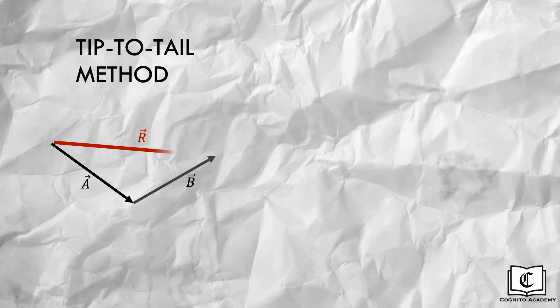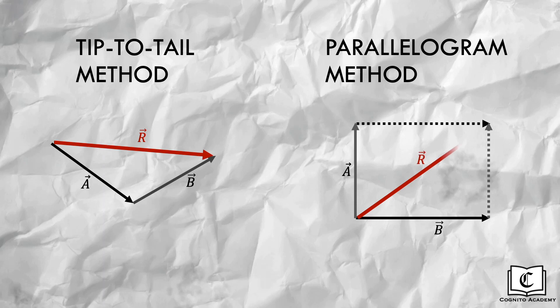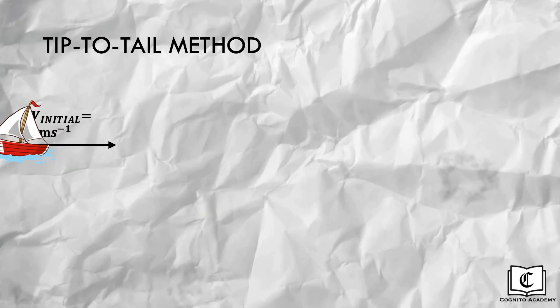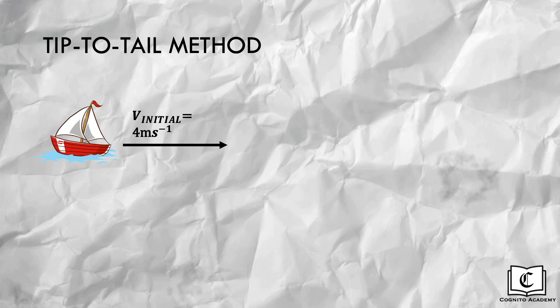There are two methods of vector addition: the tip-to-tail method and the parallelogram method. Let's first dive into the tip-to-tail method. In this example, a boat has an initial velocity of 4 meters per second towards east. Suddenly, a current travelling at 3 meters per second towards north appears. What is the final velocity of this boat?